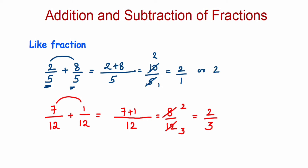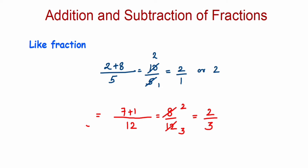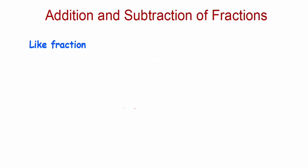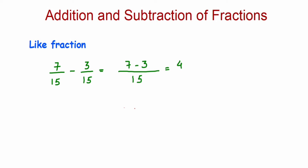Subtraction is the same — you subtract the numerators. Let me take the example 7/15 minus 3/15. The denominators are the same, so we write down the same denominator 15 and subtract the numerators: 7 minus 3 equals 4. So the answer is 4/15. We cannot cancel it further because there is no common factor, so keep it like that.